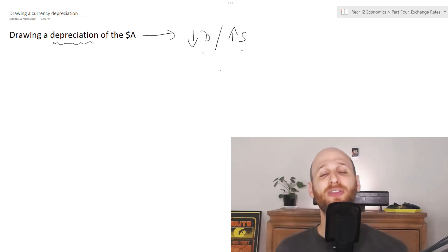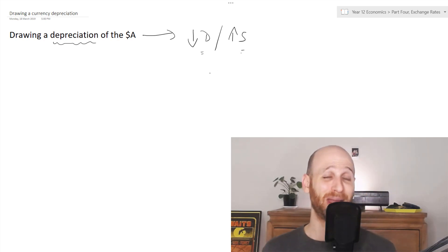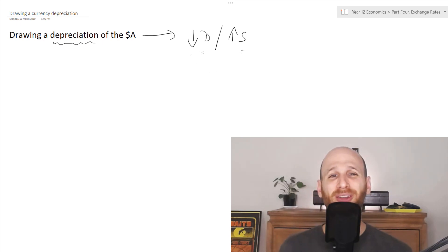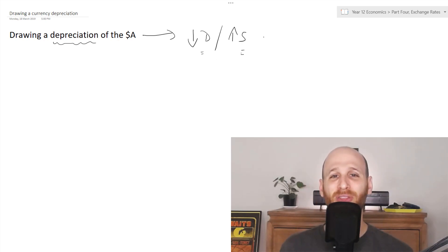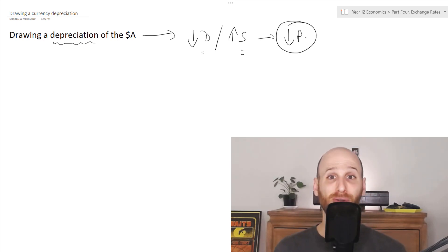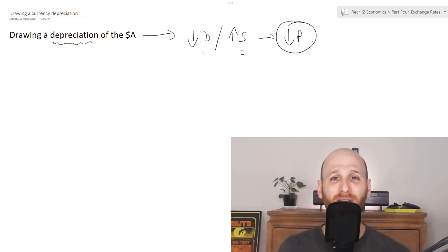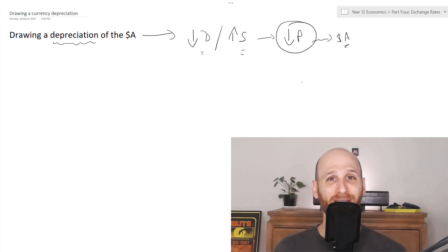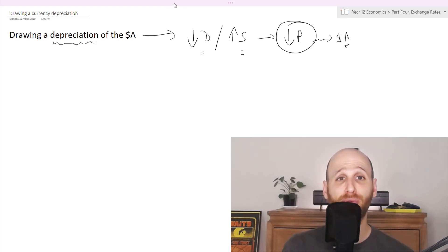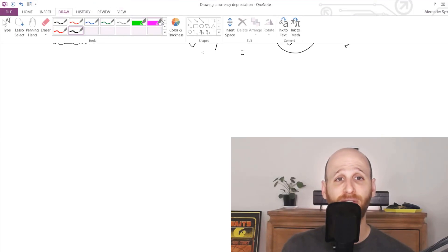Thinking back to the original graphs about demand and supply — if there's a decrease in demand or an increase in supply, that's going to lead to a decrease in price. In these graphs, the price we're talking about is all about the value of the Aussie dollar. So let's start with the first situation, which will be a decrease in demand.